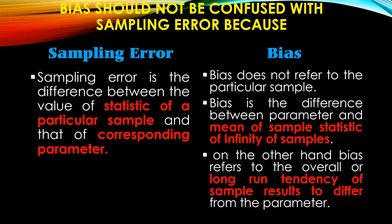Now we calculate the mean from the parameter. The sum of 100 observations divided by the number of observations gives a single value which is the mean obtained from the population, called the parameter and represented by mu. So the difference between the statistic and the parameter is called sampling error, where the statistic is from a particular sample.